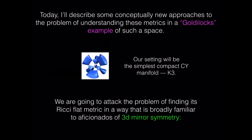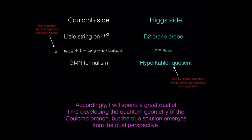Today I'm going to describe some conceptually new approaches to the problem of understanding these metrics in what I consider a Goldilocks example of such a space. Goldilocks has three bowls of porridge — one too hot, one too cold, and one just right. Tori are too easy. Generic Calabi-Yau three-folds or n-folds are a little too hard. But somewhere in the middle there is K3, which is a compact hyper-Kähler manifold of dimension four. Because it's hyper-Kähler, it shares some simplifications despite being compact, and in the case of K3 it has the generic holonomy for its dimension, SU(2). So hyper-Kähler is the same as Calabi-Yau in that dimension. I'm going to attack the problem of finding a Ricci-flat metric in a way broadly familiar to aficionados of 3D mirror symmetry.